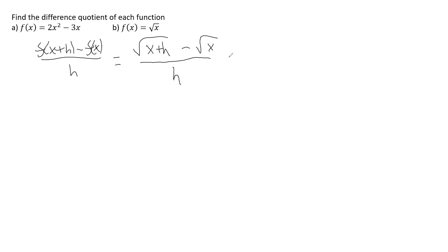Now, in this case, there's nothing to really simplify here, except that we do need to rationalize the numerator. So what we do is we multiply by x plus h plus the square root of x, which is called the conjugate.